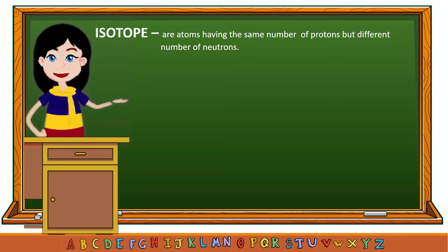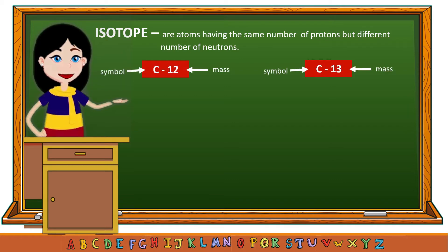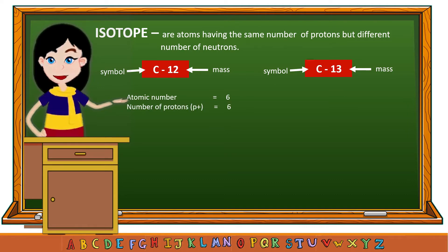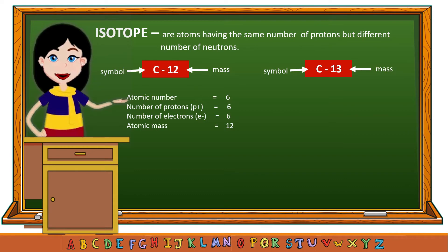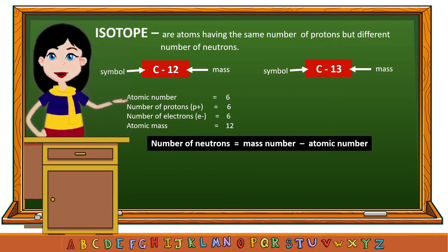For example, consider the two isotopes of carbon: C-12 and C-13. The atomic number of carbon in the periodic table is 6. Since the atomic number of carbon is 6, the number of protons and electrons of C-12 and C-13 are also 6, because the atomic number is equal to the number of protons and is also equal to the number of electrons.